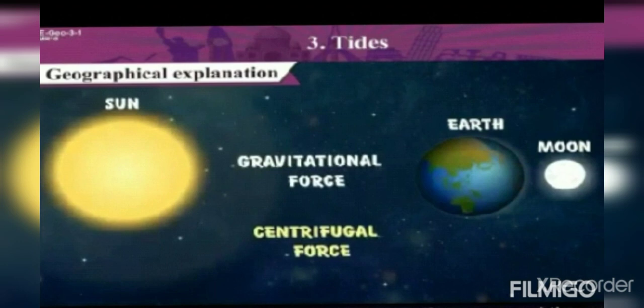Tide is directly related to the sun, the moon, and the Earth, and the gravitational and centrifugal forces that interact between them. You know that gravitational force is pulling the object towards the Earth's surface. It is the reason that two objects get attracted because of the gravitational force and they never fall off from the Earth's surface. But what is centrifugal force? Let us understand this with the help of a few activities.